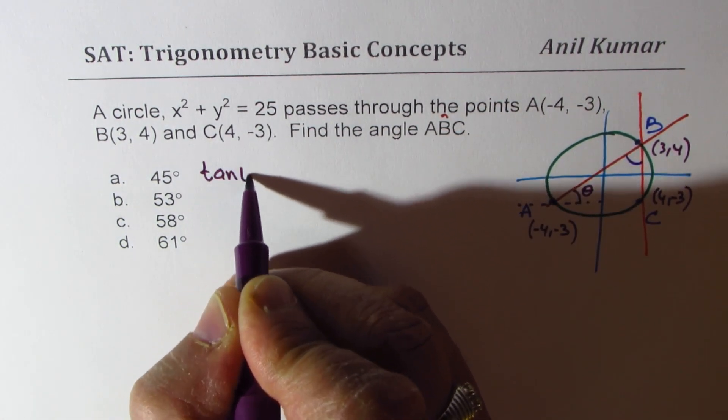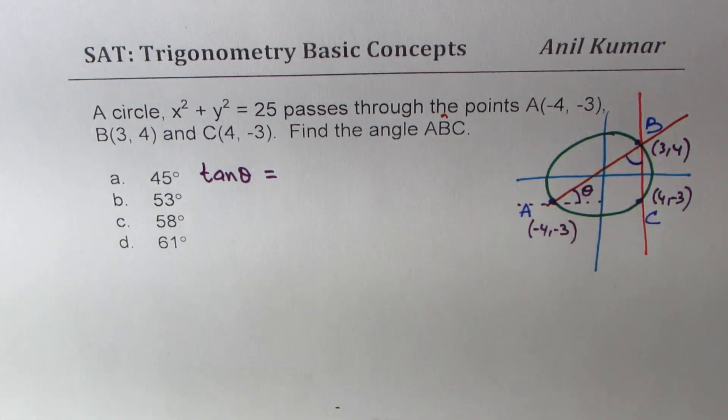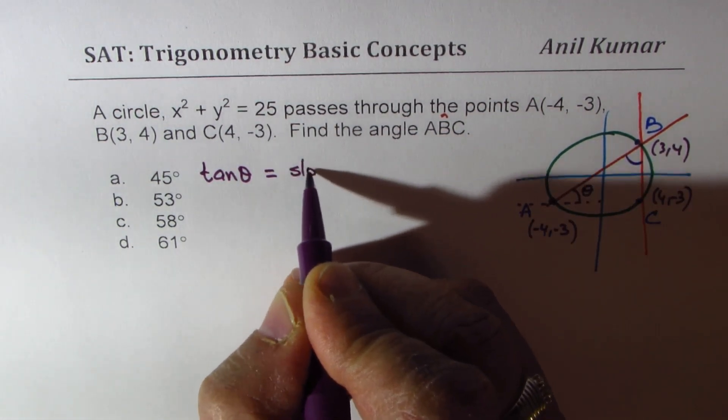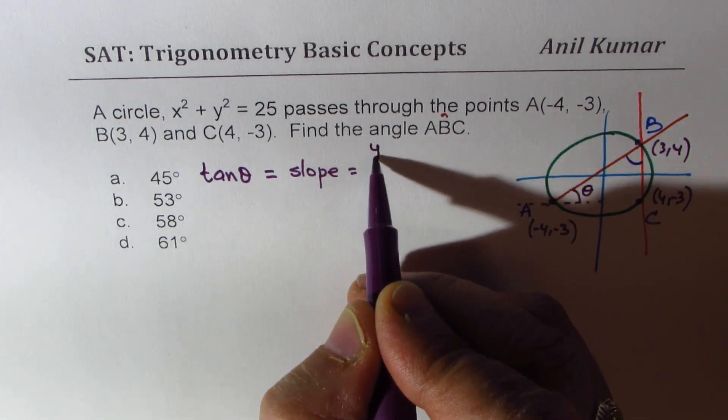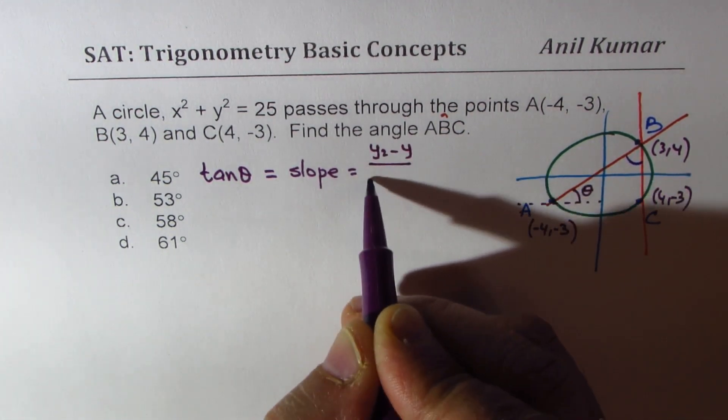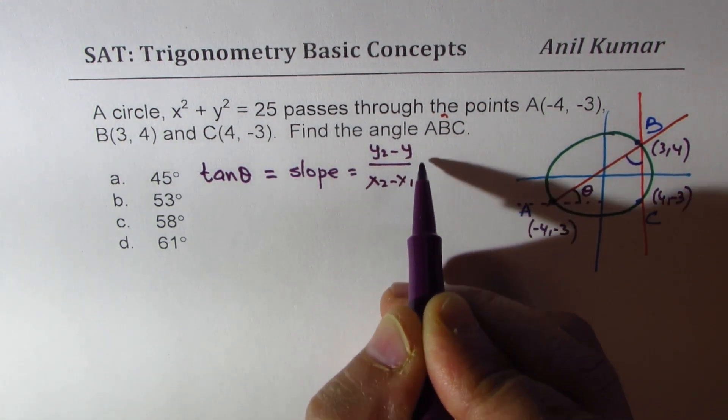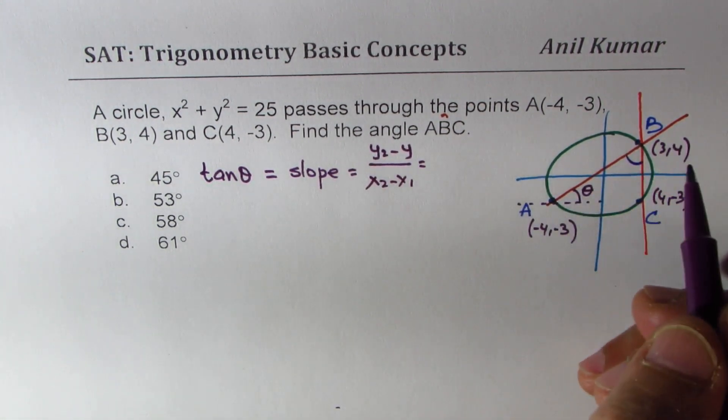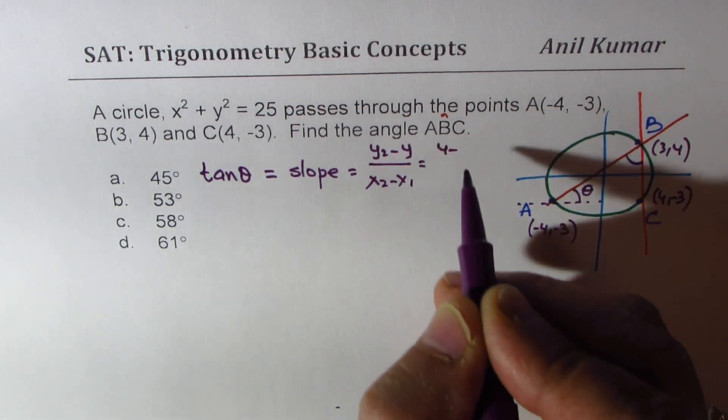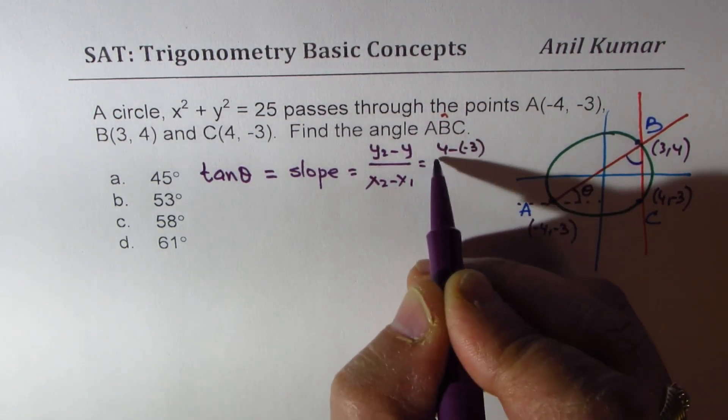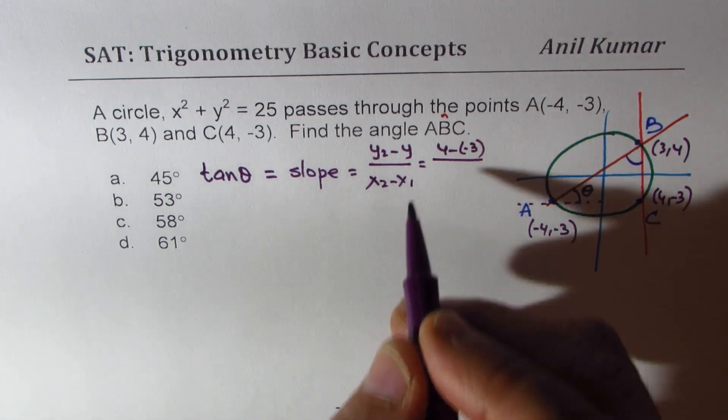So angle θ is given to us, that means tan θ is equal to slope, which is in this case y₂ - y₁ over x₂ - x₁. So the coordinates of A and B: 4 minus (-3), 4 minus (-3), over 3 minus (-4).